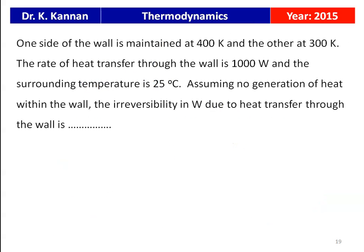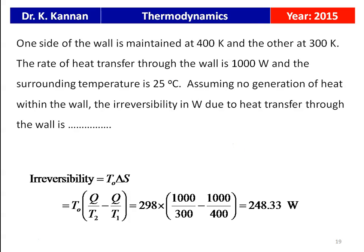From the 2015 question paper: one side of a wall is at 400 K, the other at 300 K; rate of heat transfer is 1000 W; surrounding temperature is 25°C (298 K). Assuming no heat generation within the wall, irreversibility = T₀ × ΔS = 298 × (1000/300 − 1000/400) = 248.33 W. The answer is 248.33 W.